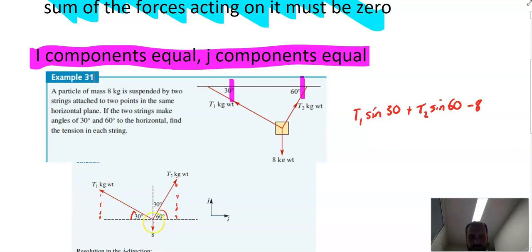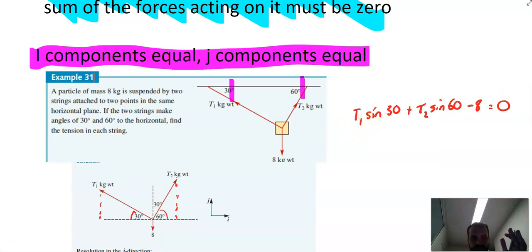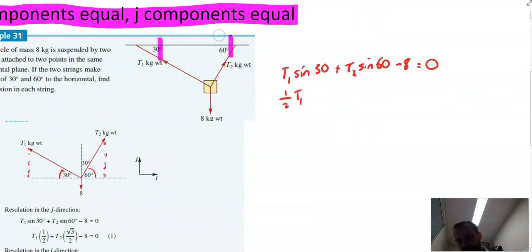These three vectors, because we're in equilibrium, the j components are going to be equal, or they're going to add together to equal zero. So I can play with that a little bit, because I know that sine 30 equals one half. I know that sine 60 equals root three on two. That's the tension in string two now, minus eight equals zero. And that's going to be my first equation.